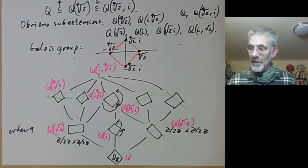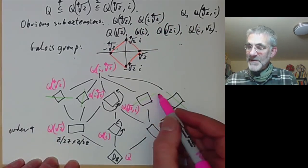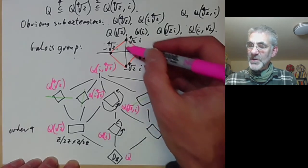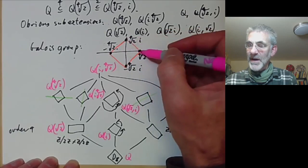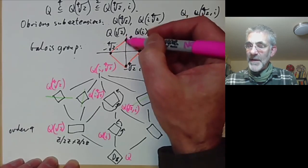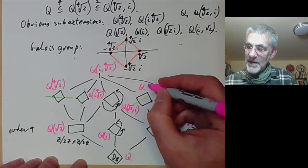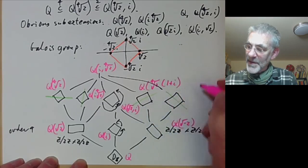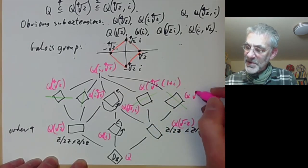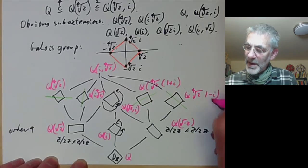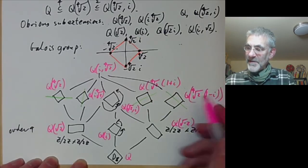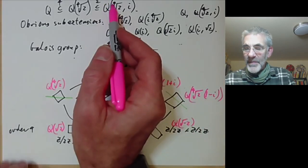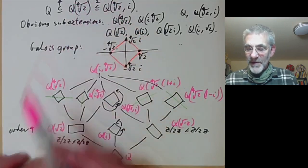Now we see there are two extra fields we didn't notice when writing down the obvious ones. The elements of this field are fixed by reflection in one diagonal — sending the fourth root of 2 to the fourth root of 2 times i. If we add these two elements, that sum will be fixed by this reflection. So this is the field Q((1+i)·2^(1/4)). And the other is similar: Q((1−i)·2^(1/4)). So the Fundamental Theorem of Galois theory has found these two slightly hidden subfields.